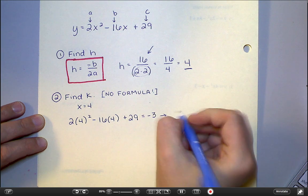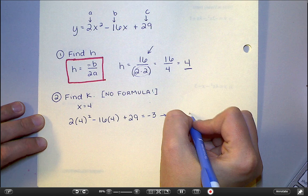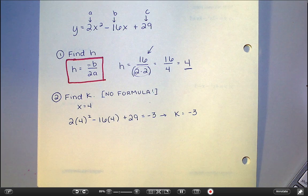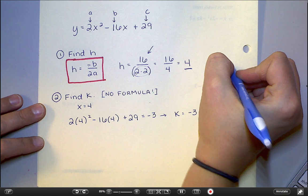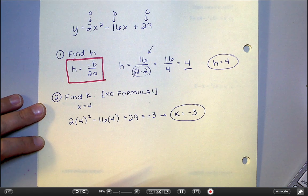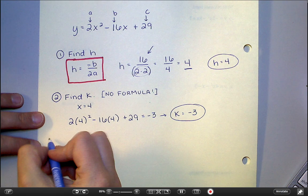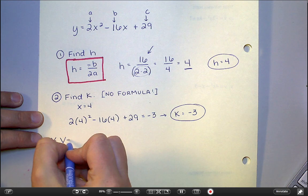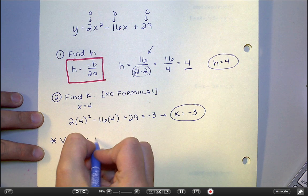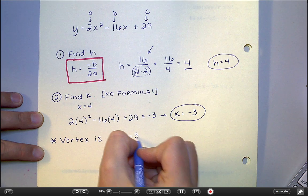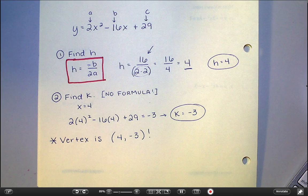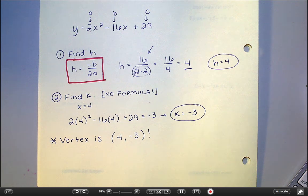So if I put together this information that back here I got that h was equal to 4 and this information, I can now say that my vertex is located at 4 negative 3. If that was the only thing this question asked of me was to get the vertex, I'd be done right now.